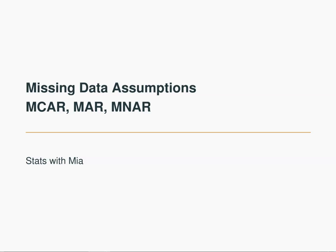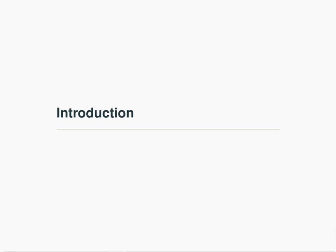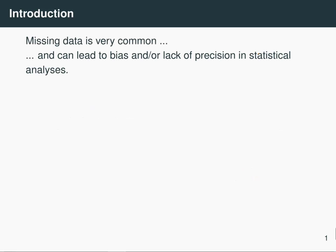Hello and welcome to Stats with Mia. Today we're going to be talking about missing data, and we're introducing the three possible missing data assumptions: they are missing completely at random, missing at random, and missing not at random. In statistics, it's really important to look at the data that you've got — you want to visualize it, analyze it, and interpret it — but it's also really important to look at the data that's not there. Actually, it's quite common in lots of observational and also in some experimental settings to end up with a problem of missing data.